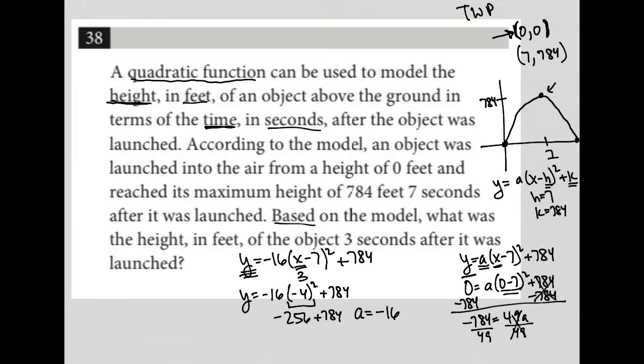So this becomes a positive 16. That positive 16 times negative 16 is negative 256 plus 784. So let's make that negative and then plus 784 in my calculator. And what I get is that y, which is the height, is equal to 528.